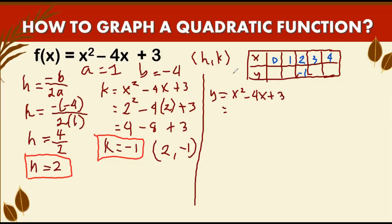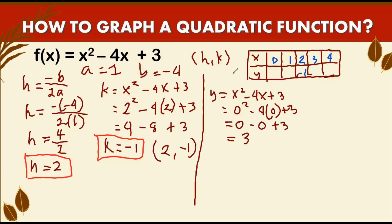We will replace x with 0. So we get 0 squared minus 4 times 0 plus 3. The square of 0 is 0, then minus 4 times 0 is 0, then plus 3. So y becomes positive 3. Write down 3 in your table of values.